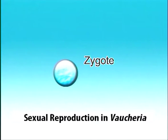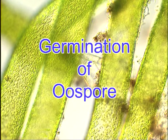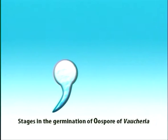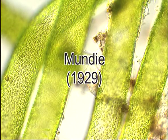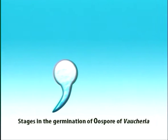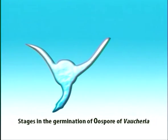When the original wall decays, the oospore is liberated and then undergoes a period of rest. The resting zygote contains a number of reddish or brownish bodies. After the dormant period, the oospore germinates directly into a new filament without the formation of meiospores. Reduction division occurs in the first nuclear division in the germinating oospore, in which case the thallus is haploid. However, according to Mundie (1929), the Vaucheria thallus is diploid and meiosis occurs at the time of gamete formation. The oospore wall ruptures and a colorless germ tube emerges, forming the aerial system.